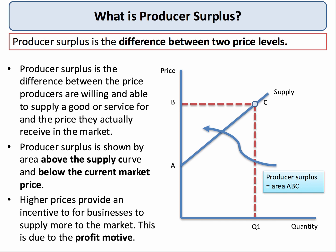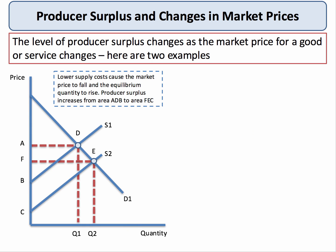Now, markets can change. Let's take a look at some examples of what this does to producer surplus. The level of producer surplus can change as the market price for a product changes. The first example is an outward shift of supply caused by a fall in the costs of production. The demand curve is D1 and the supply curve shifts from S1 to S2. A fall in supply costs causes the market price to fall from A to F, and the equilibrium quantity to increase from Q1 to Q2.